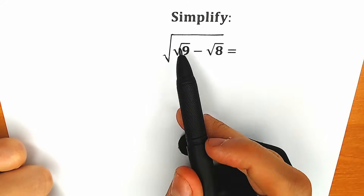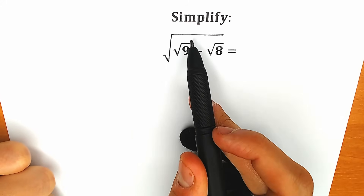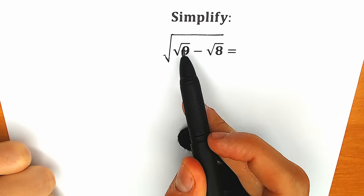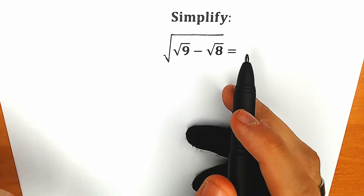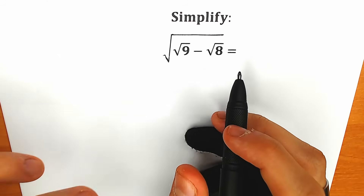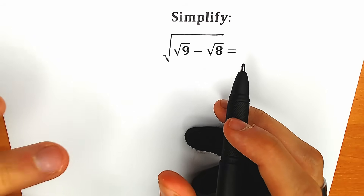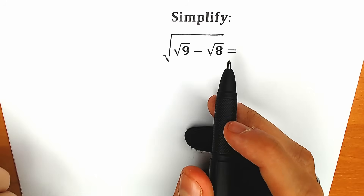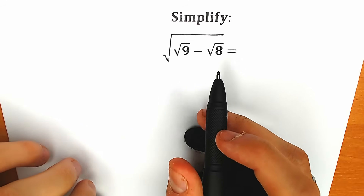We need to simplify this expression. We have square root of square root of 9 minus square root of 8. If you have your answer, your thoughts, you can write it in the comments below — and you will be shocked about the correct answer, because this question is very tricky.